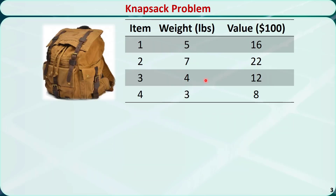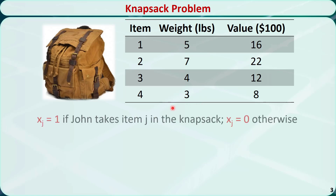We can formulate this problem as a binary integer programming problem. We define xj equal to 1 if John takes item j, and xj equal to 0 otherwise.